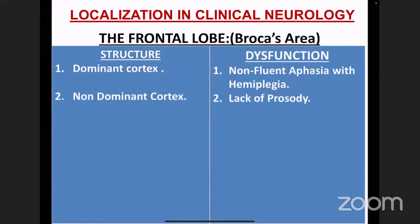Another important area is Broca's area in the frontal lobe, responsible for fluency of speech. Normally we speak about 100 to 110 words per minute; if reduced below 10 words per minute, we call it non-fluent speech. If Broca's area gets affected, the patient will have non-fluent speech — known as Broca's aphasia. This is seen on the dominant cortex; in right-handers, more than 90% of the time, language areas are situated on the left side, which we call the dominant cortex.